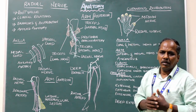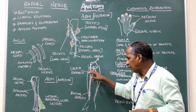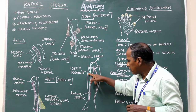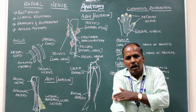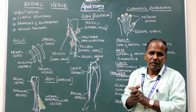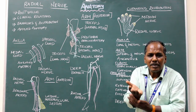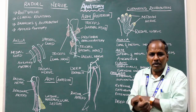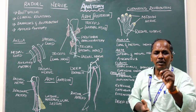The deep branch, or the posterior interosseous nerve, arises near the lateral epicondyle. It pierces the supinator muscle and enters the posterior compartment, or the extensor compartment, of the forearm. In the forearm, it runs between the superficial and deep group of extensor compartment muscles, lying posterior to the interosseous membrane, accompanied by the posterior interosseous artery.